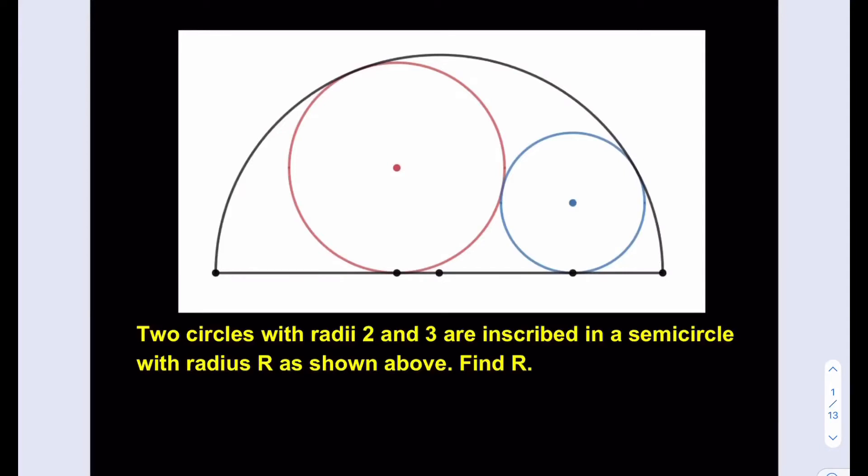Hello everyone. In this video we're going to be solving another geometry puzzle. Two circles with radii 2 and 3 are inscribed in a semicircle with radius r as shown above. Find r. Go ahead and try this problem yourself first before you see the solution.